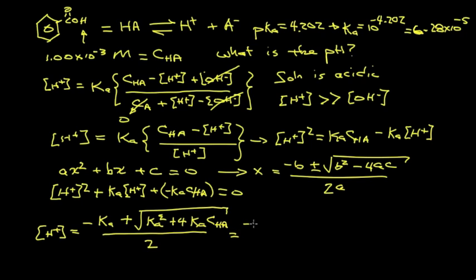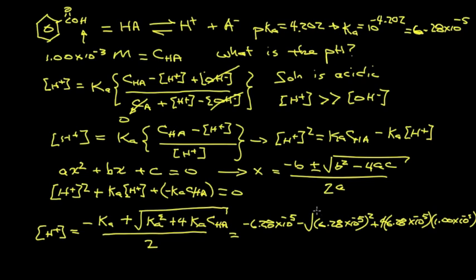So this is minus 6.28 times 10 to the minus 5 plus the square root of Ka squared plus 4 Ka CHA, divided by 2. Running the numbers on the calculator, we get a hydrogen ion concentration equal to 2.21 times 10 to the minus 4 molar.